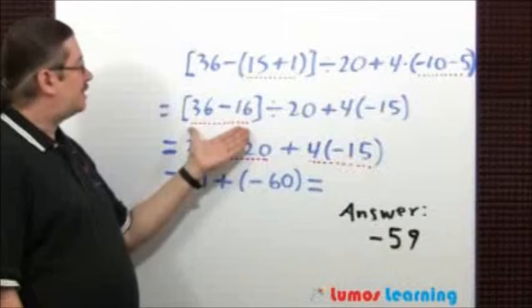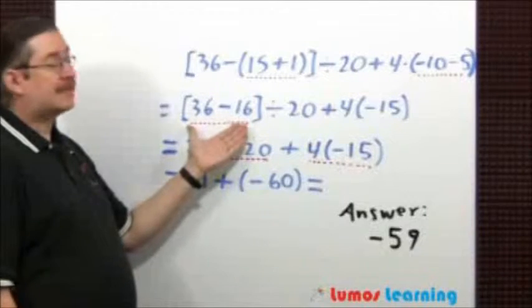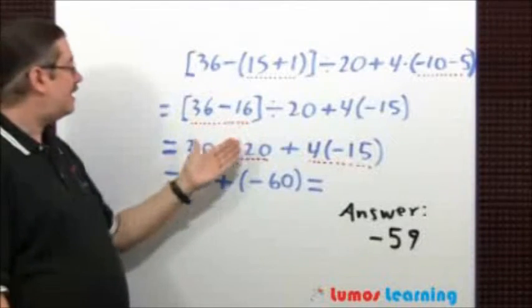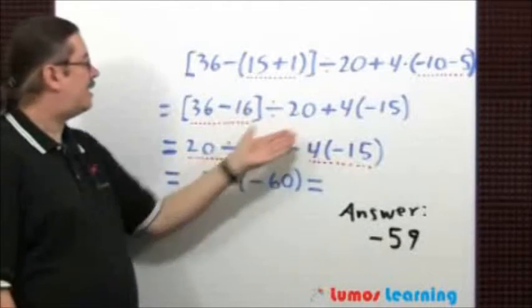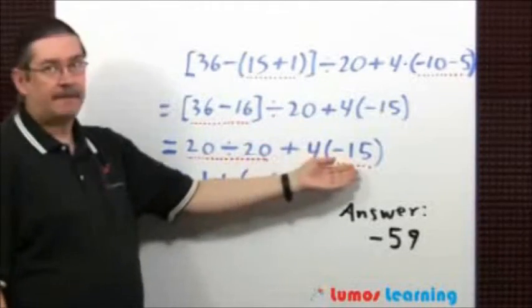Here we have another set of grouping symbols. 36 minus 16 is 20, and the rest I just copy over again.